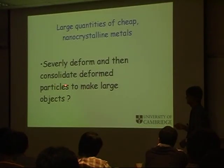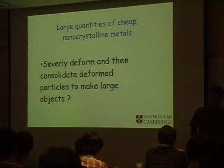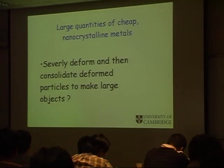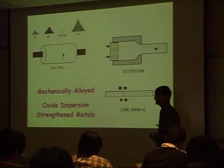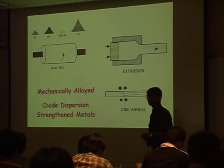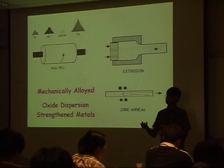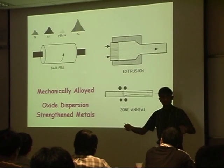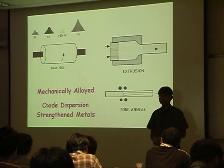We can reform particles and combine them all to make large objects. There is a process by which we can do this, and that process is known as mechanical alloying. Mechanical alloying is exactly like the example of Cypher, where you start with two different phases and severe deformation mixes them up without melting — just the deformation mixes up the phases.